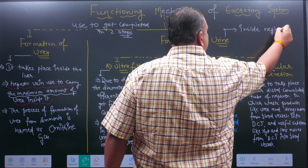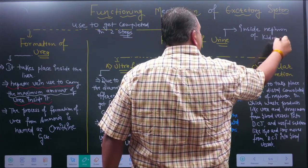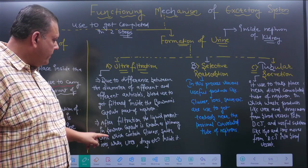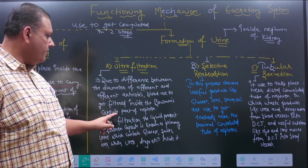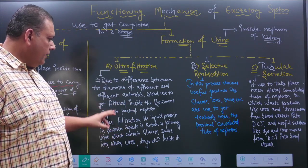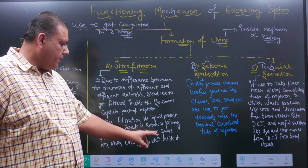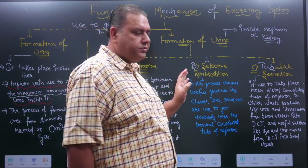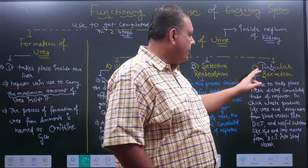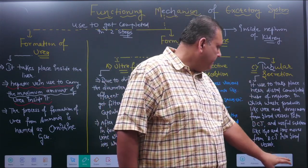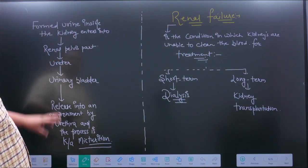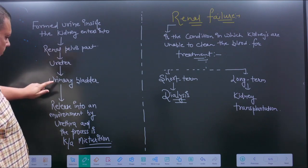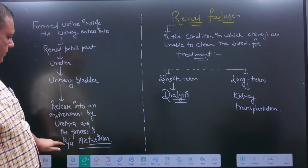Urea formation occurs inside the liver, and urine formation occurs inside the nephrons of the kidney. Ultrafiltration occurs due to the difference in diameter between the afferent and efferent arterioles — blood gets filtered inside the Bowman's capsule producing filtrate with both useful and waste products. Selective reabsorption reabsorbs useful products back. Tubular secretion near the distal convoluted tube involves the exchange of useful and waste products. Once formed, urine enters the renal pelvis, then the ureter, then the urinary bladder, and is released via the urethra in a process called micturition.